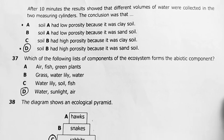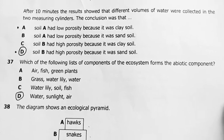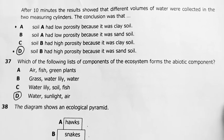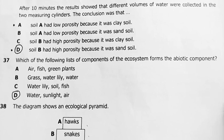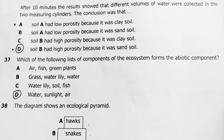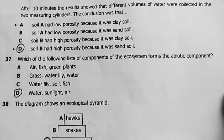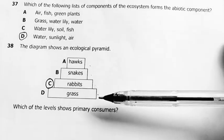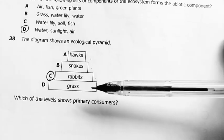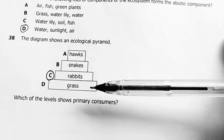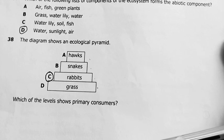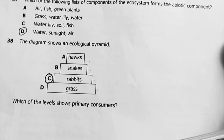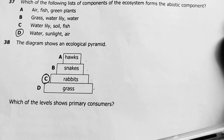Question 37: which of the following lists of components of the ecosystem form the abiotic component? Abiotic means non-living; biotic means living. My answer was D — water, sunlight, air, and other non-living components.